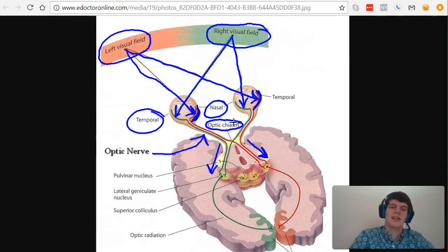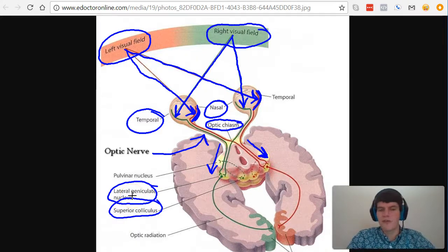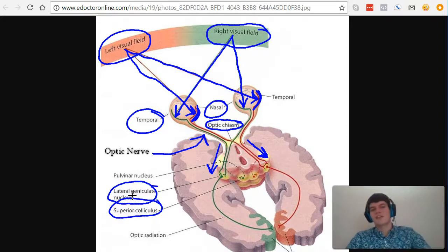Then this information passes through a variety of structures such as the lateral geniculate nucleus and interacts with the superior colliculus. There's a lot more information here—I'd like you to know all of it, but we don't have enough time to cover it in this video.